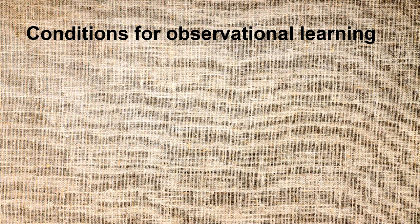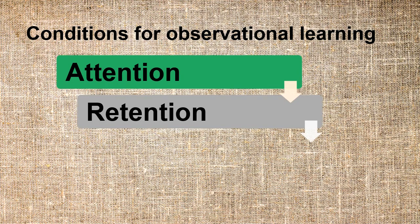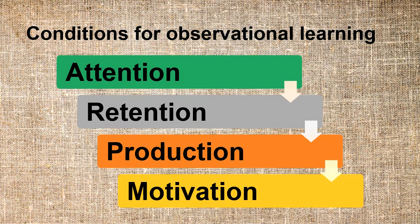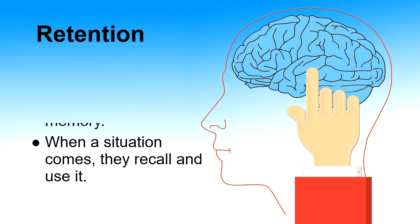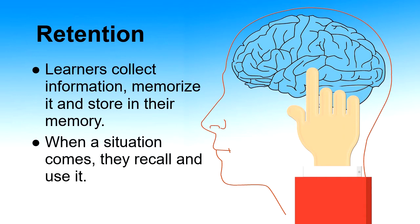There are four conditions for observational learning: attention, retention, production, and motivation. Attention means that as a teacher demonstrates something, students pay attention to the teacher's actions and words — for example, in a dance class, students observe the teacher's actions and follow instructions to learn dancing skills. Retention means that whatever information students have collected, they memorize and store it in memory, then recall and use it when a situation requires that knowledge.